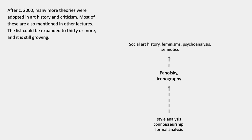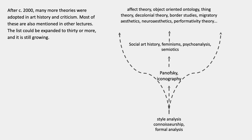After around 2000 or so, many more theories were adopted in art history and criticism. This list could be expanded to 30 or more and it's still growing. There's affect theory, object-oriented ontology, thing theory, decolonial theory, border studies, migratory aesthetics, neuroaesthetics, and performativity theory. I actually mention all of these in other lectures except neuroaesthetics.